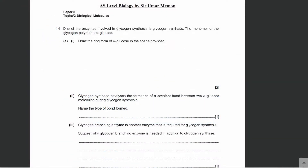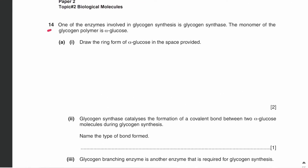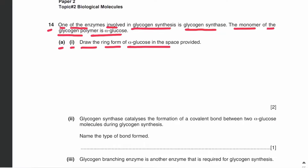Assalamu alaikum everyone. In this video lecture we will be discussing paper two past papers of biological molecules, which is a topic from AS Level Biology 9700. Let's move on to question number 14. One of the enzymes involved in glycogen synthesis is glycogen synthase. The monomer of the glycogen polymer is alpha glucose. Part A: draw the ring form of alpha glucose in the space provided.